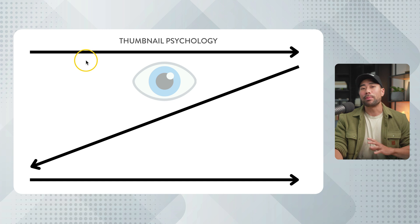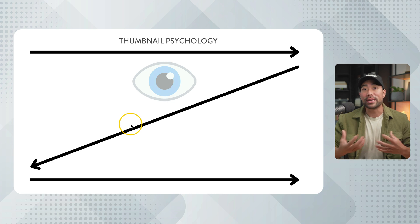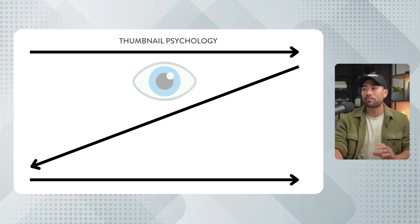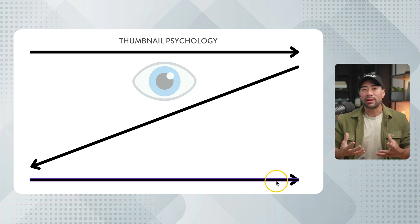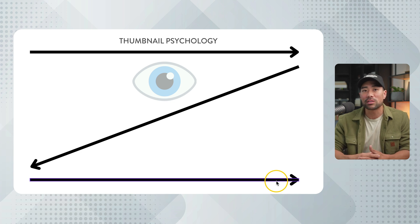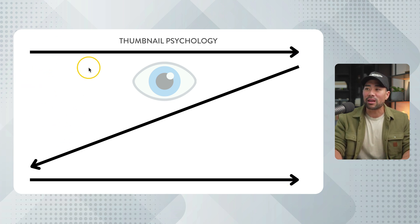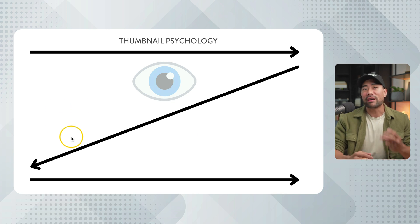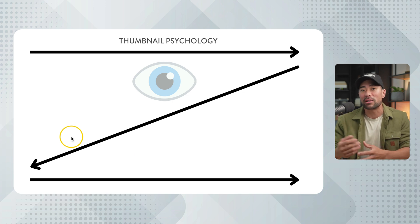The next thing I want to explain — and one that is in my opinion overlooked — is thumbnail psychology. The best way to illustrate this: imagine this as a thumbnail, and this is how we tend to read. We read from left to right in a zigzag kind of pattern. So with that in mind, that's what we need to take into consideration when designing our thumbnails. Whatever you want to spotlight, you want to have it featured in that top-left area. You only have about three seconds to capture someone's attention before they swipe or scroll somewhere else.